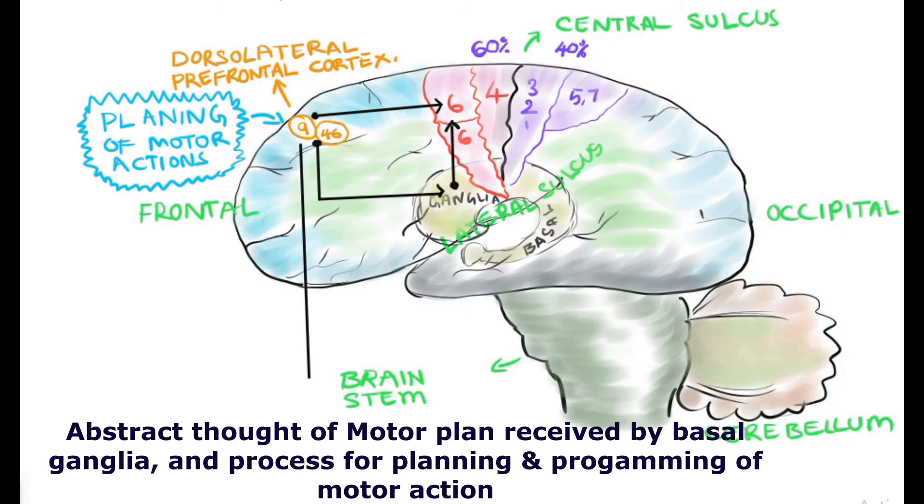The main function of the basal ganglia is to receive the copy of the motor information from the planning area, number 9 and 46, and send it back to the motor cortex.